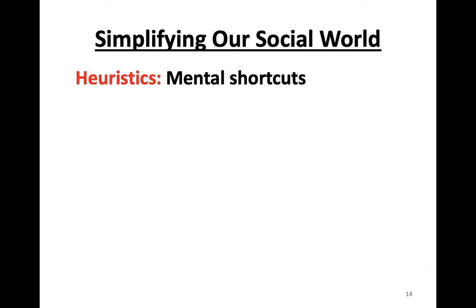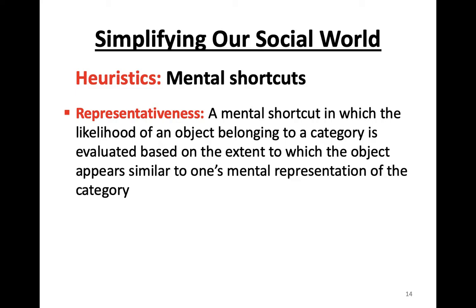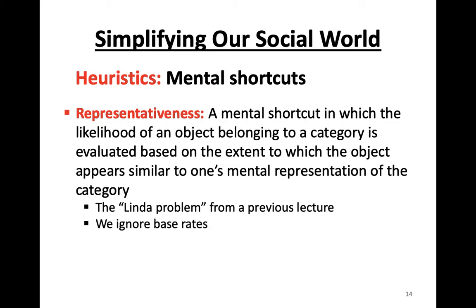Another way that we simplify our social world in addition to schemas are heuristics — mental shortcuts. One particular heuristic is the representativeness heuristic, a mental shortcut in which the likelihood of an object belonging to a category is evaluated based on the extent to which the object appears similar to one's mental representation of that category. You might remember the Linda problem from a previous lecture on judgment and decision-making, where people often make the conjunction fallacy and ignore base rates because the profile of Linda was presented as representative of being a feminist.